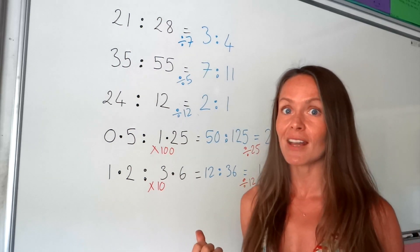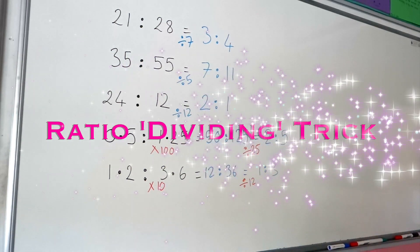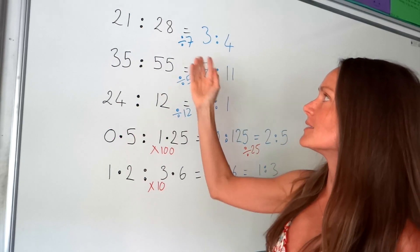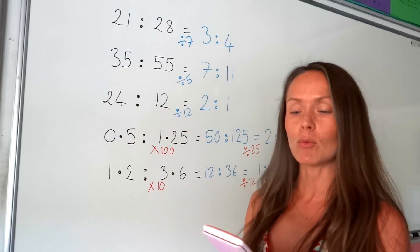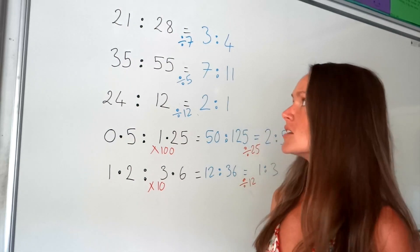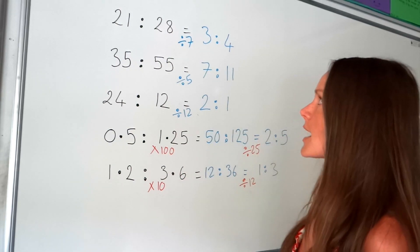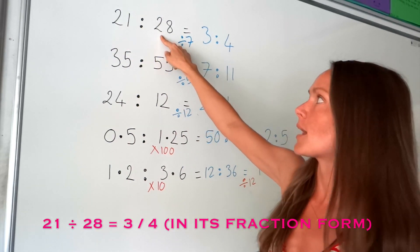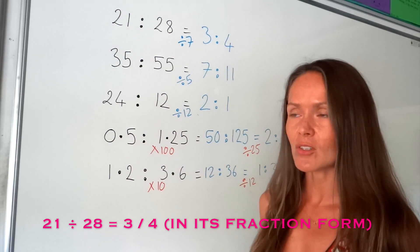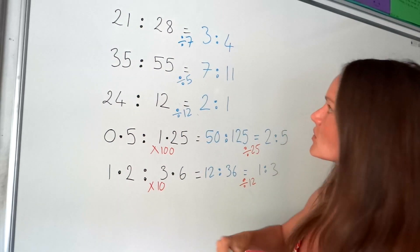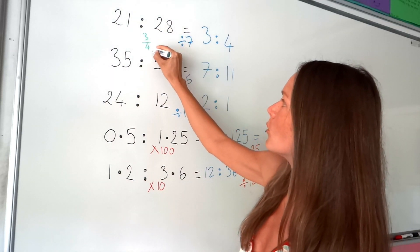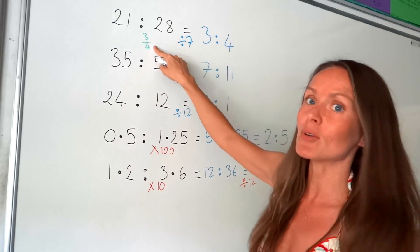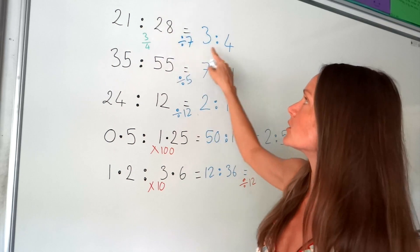Just before I go on to the next ones, I want to show you a little trick. If you've got a calculator, most calculators when you divide these numbers will give the answer as a fraction. So if you type in 21 divided by 28, it will give you 3 over 4. And look — the ratio is 3 to 4. It's the same numbers given in the fraction. If you divide 35 by 55, it gives you 7 over 11, which matches the ratio.